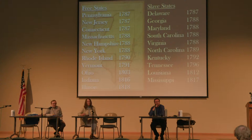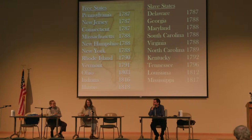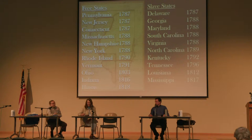Prior to Missouri's application, the pattern that had started, even with the colonies becoming states, was that you would get a free state and a slave state. That pattern had gone back and forth with some regularity. There had been a couple of little hiccups, but usually a slave state and a free state alternated.